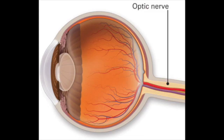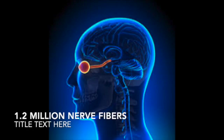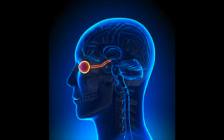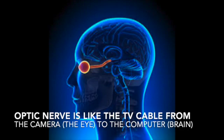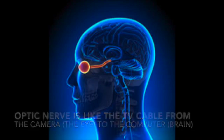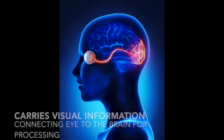What is the optic nerve? It is a collection of 1.2 million nerve fibers. It connects the brain with the eyeball. It's like the TV cable that goes from the camera to the computer — the camera being our eye and the computer being our brain. The optic nerve connects them. Without this cable, we wouldn't see.